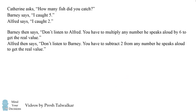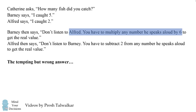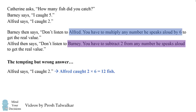So at first the problem seems easy. But if it seems easy to you, you might be falling for the tempting but wrong answer. You might think that every number Alfred says, you have to multiply by six. So if Alfred says he caught two fish, that means he caught two times six, which equals 12 fish. Similarly, from Barney's number, you might think you have to deduct two from the number he speaks. So if Barney says he caught five fish, you might think he actually caught five minus two, which equals three fish. But this is the incorrect answer.